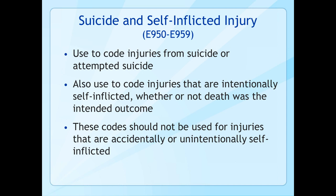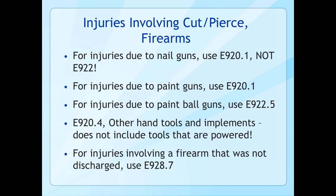For saw injuries: larger saws and woodworking machines use E919.4; powered hand saws or powered hand tools use E920.1; unpowered saws use E920.4. For nail guns and paint guns, these are considered powered hand tools and should be coded E920.1, not E922. Paintball guns, however, involve a projectile and have a specific code — E922.5. The code E920.4 covers other non-powered hand tools and implements and does not include any powered tools.